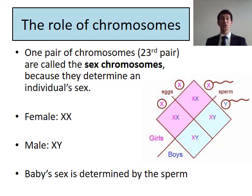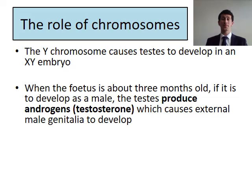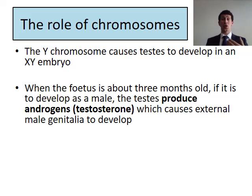So it's the father who determines the sex of the child. The Y chromosome itself causes testes to develop in an XY embryo. In a male fetus, that Y chromosome is what causes testes to develop. When the fetus is about three months old, if it's going to develop as a male, the testes will start to produce androgens — or as you more commonly know them — testosterone. That testosterone will then cause the male genitalia to develop.